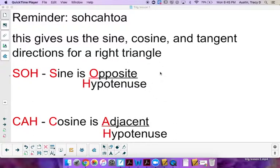So a reminder of SOHCAHTOA, again something that you should have learned in geometry, but you need a reminder obviously. SOHCAHTOA basically gives us the directions for sine, cosine, and tangent for right triangles.